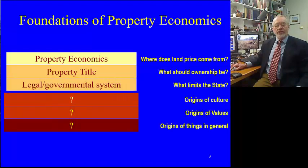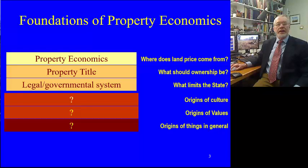When we start to ask where property title comes from, we can say it's always been here, it was here before I was born and probably here after I leave. But to really understand it, we have to dig a little bit deeper. We see that in Australia we use the Torrens system of freehold property in most parts, and in some parts, such as the ACT, we use leasehold with a Torrens-type property system.